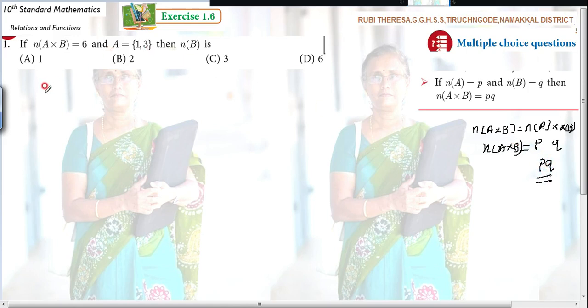Similarly, here you have to do. What is given? n(A × B) equals 6, isn't it? n(A × B) is nothing but n(A) × n(B). Do you follow?